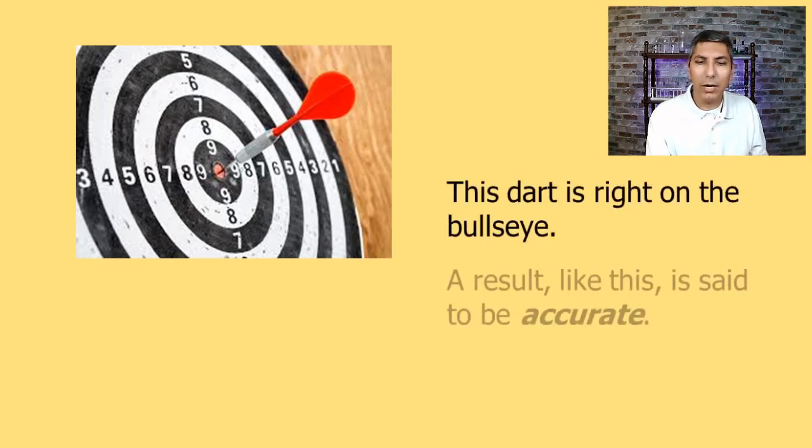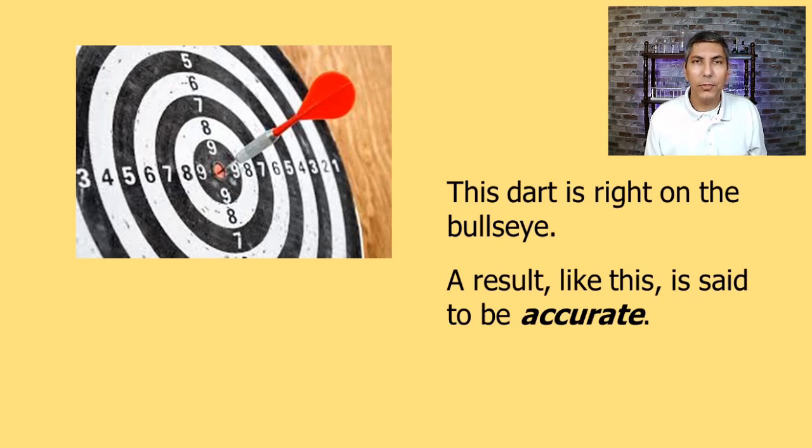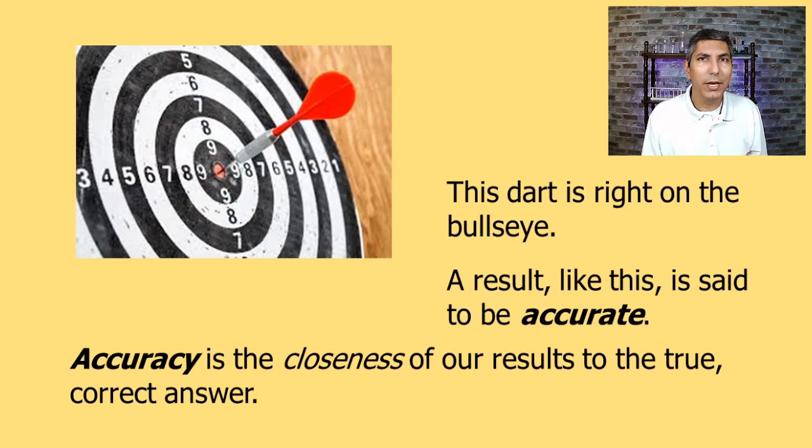Since the dart is right on the bullseye we say that this result is accurate. Accuracy is defined as the closeness of our results to the true or correct answer. If you're in the laboratory trying to analyze or calculate something you always are aiming for an accurate answer. So accuracy is very important.